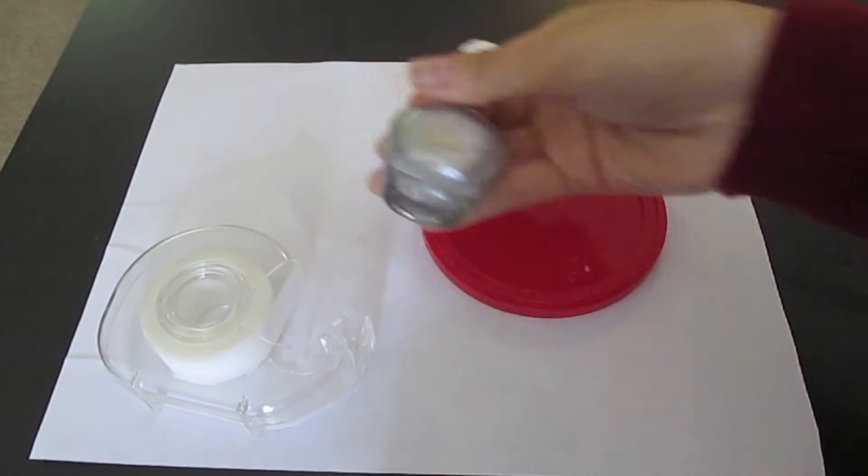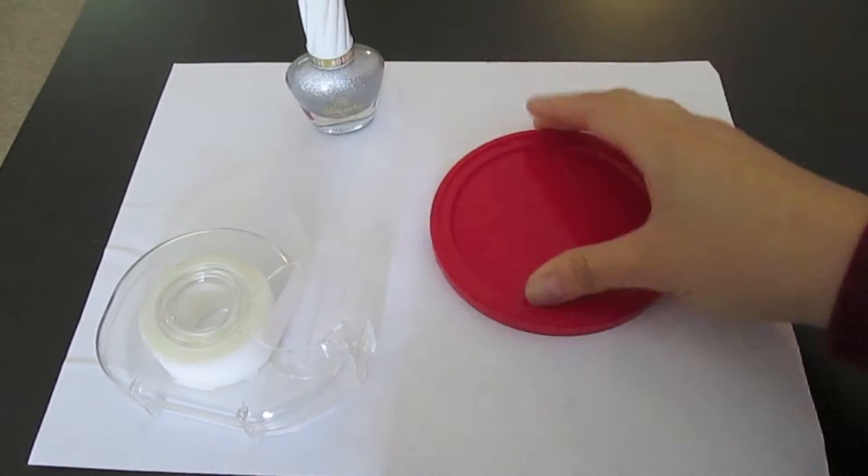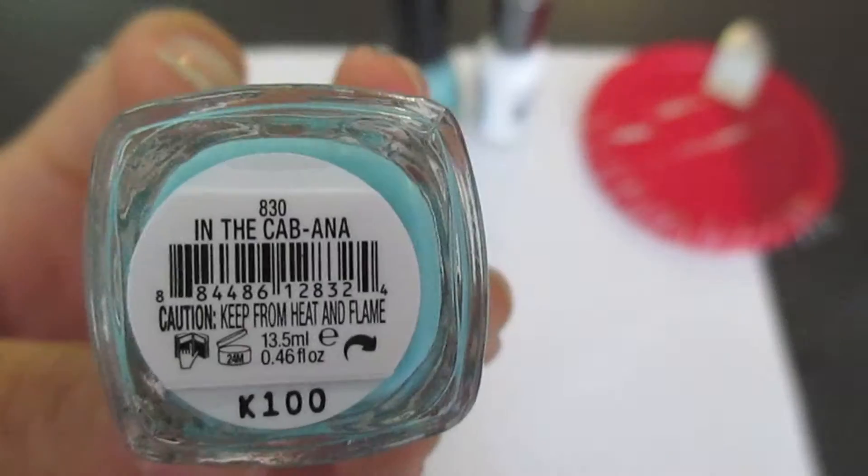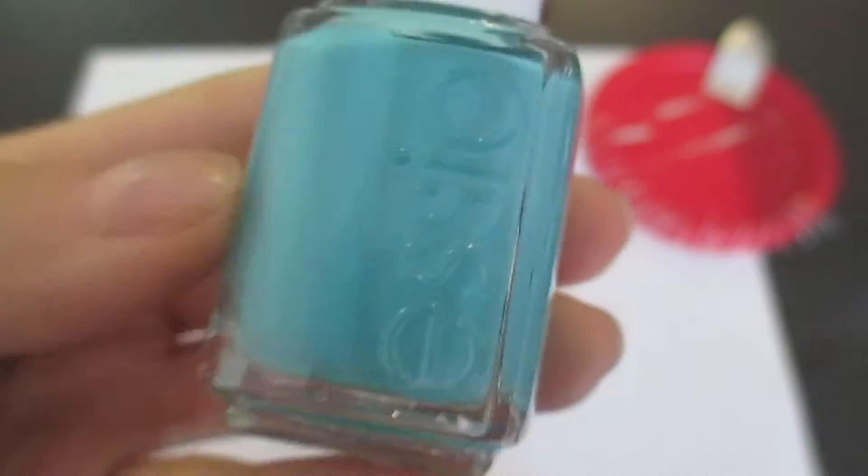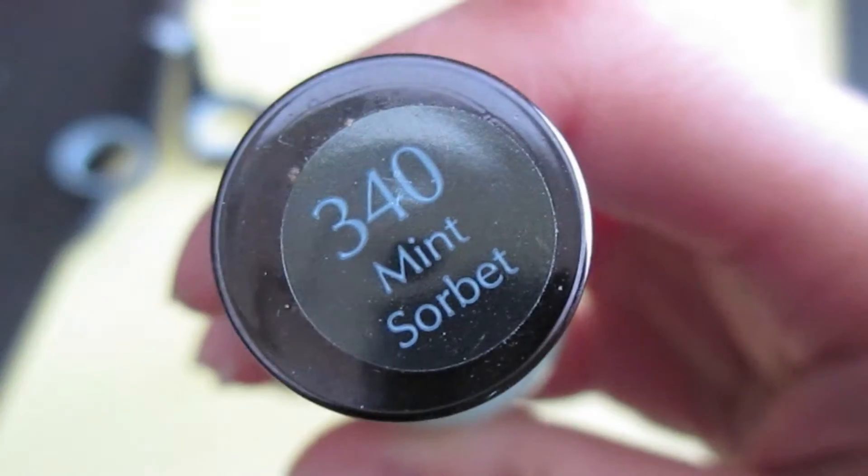You're going to need nail polish, something to stick your nail tape on and scotch tape. I'm using In the Cabana from Essie and Mint Sorbet by Sally Hansen.